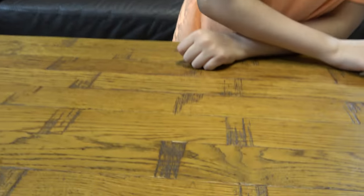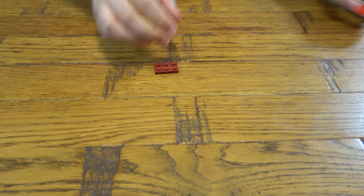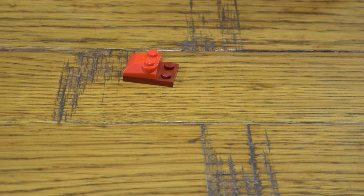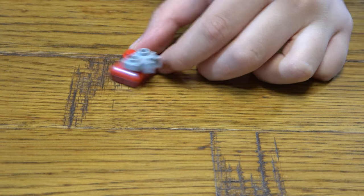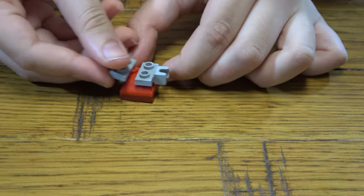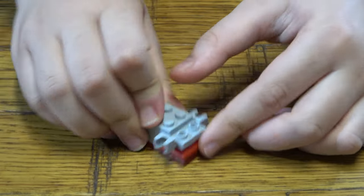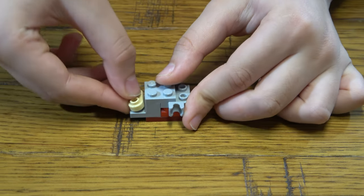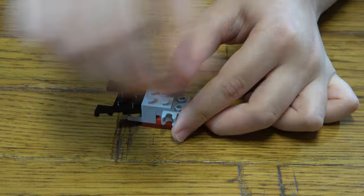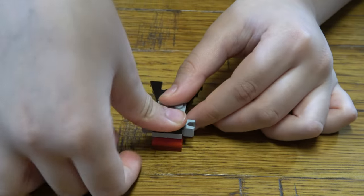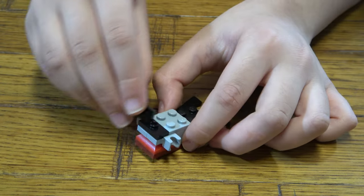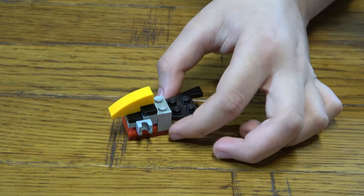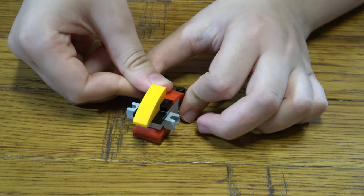So let's start. First we get this, then we get that, then we get these two, then we get that. Next we place this here, this here, and this and this, and place that there.